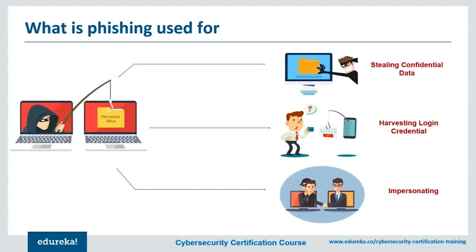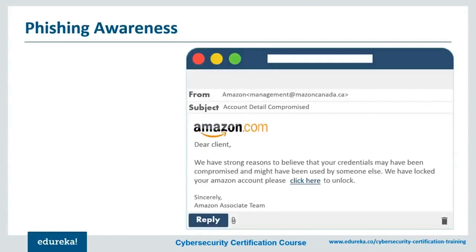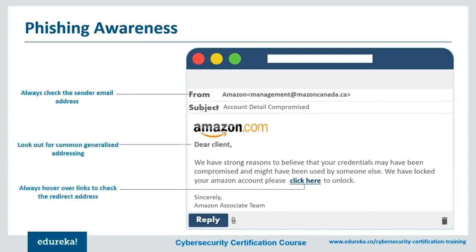To protect yourself from phishing, you need to be aware of how phishing emails actually work. A phishing email has very specific properties. First, it will use a generalized greeting like 'dear client.' Second, the message won't be from a reputable source — for example, the label may say Amazon, but the actual email address is something like 'management at Maison Canada.ca,' which is not a legitimate Amazon address. Third, you can hover over redirect links to see where they actually redirect — if it says 'www.fakeamazon.com,' it's a phishing email. You should report such emails to your administrators.